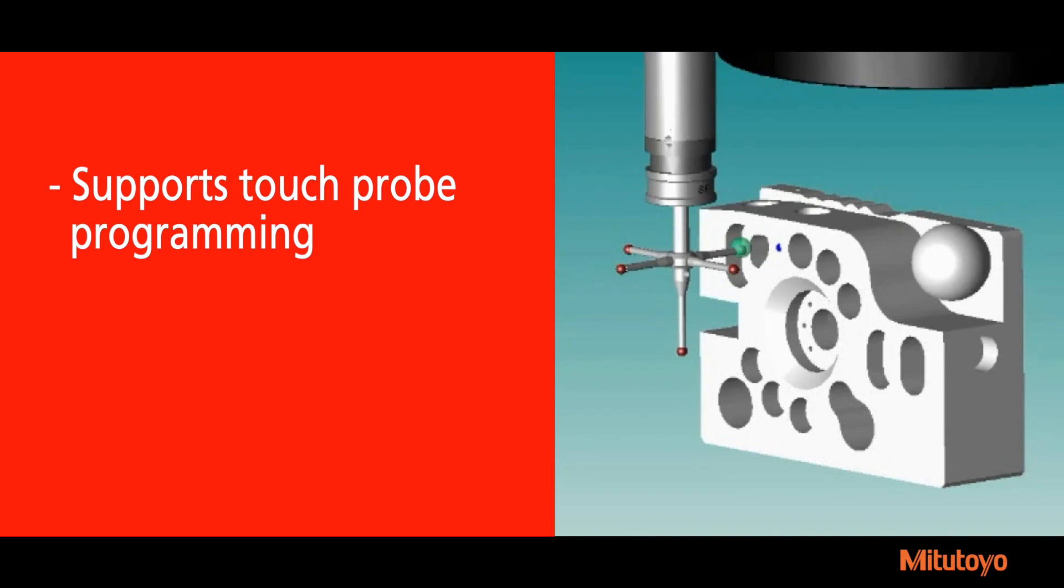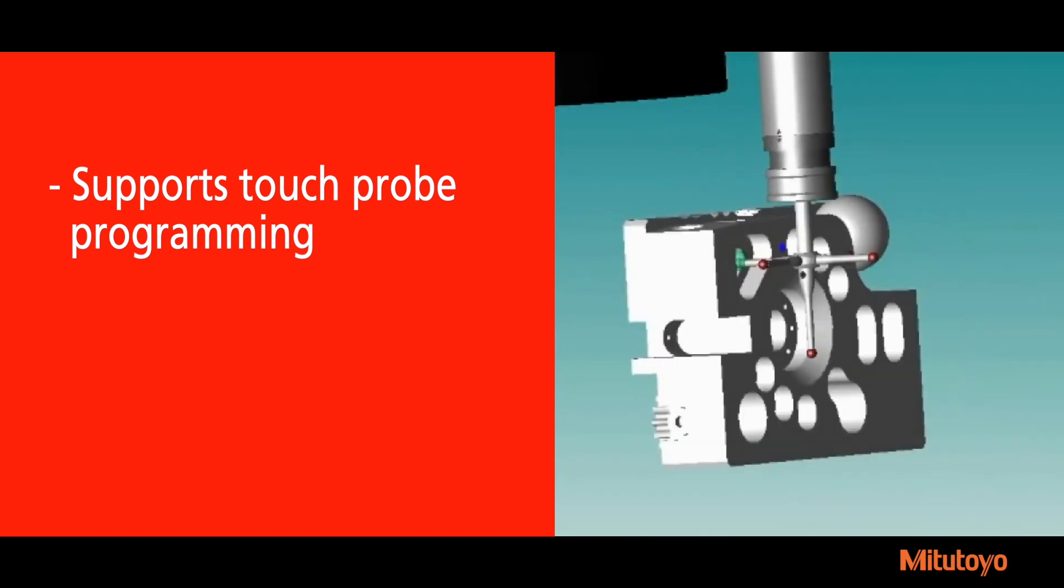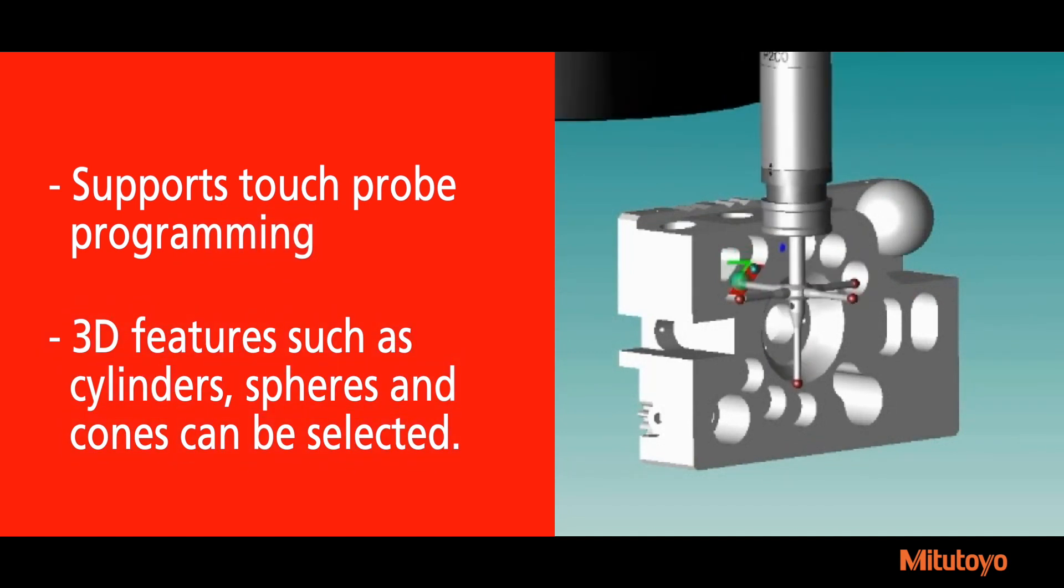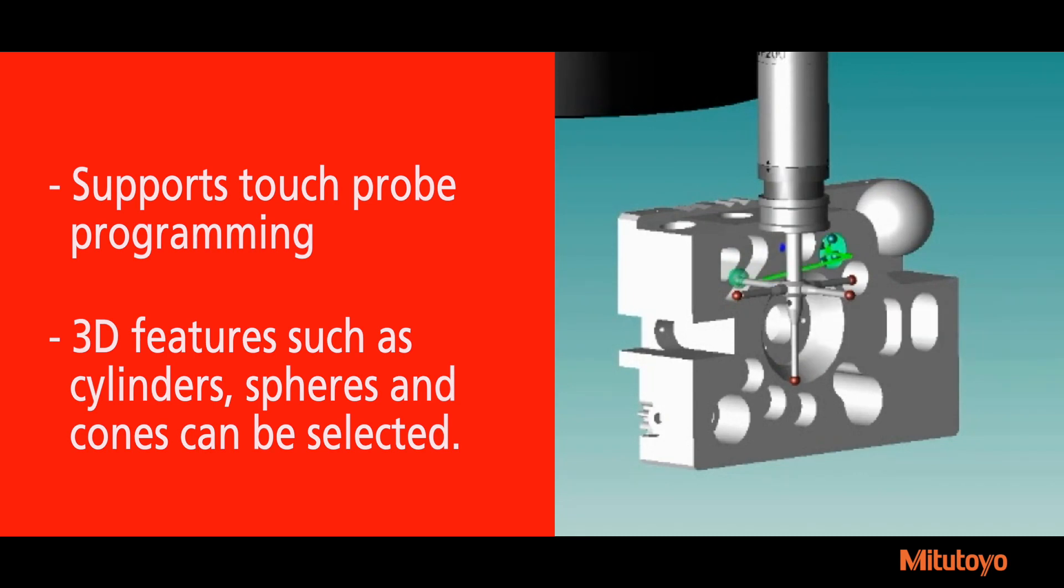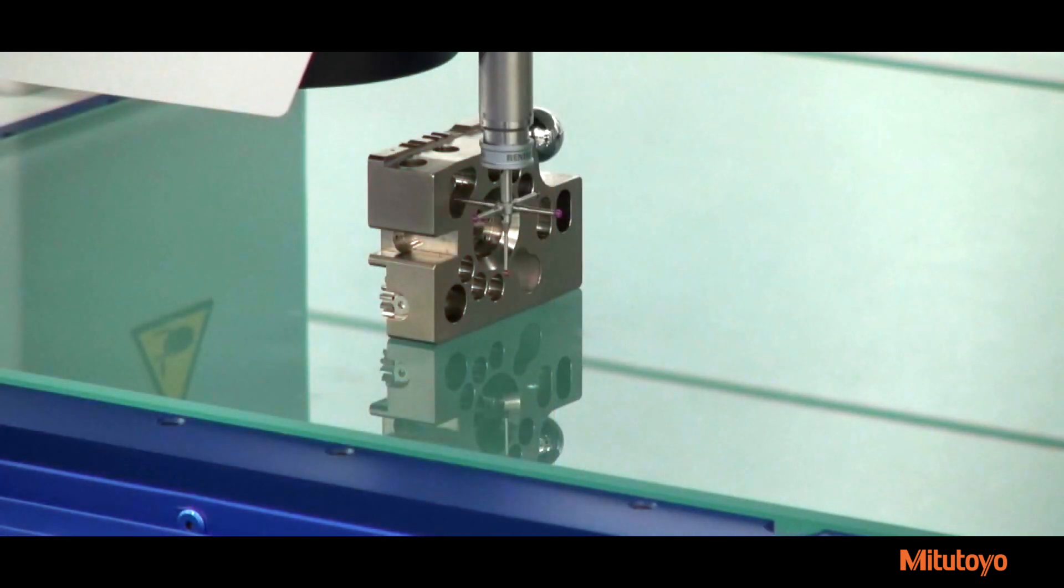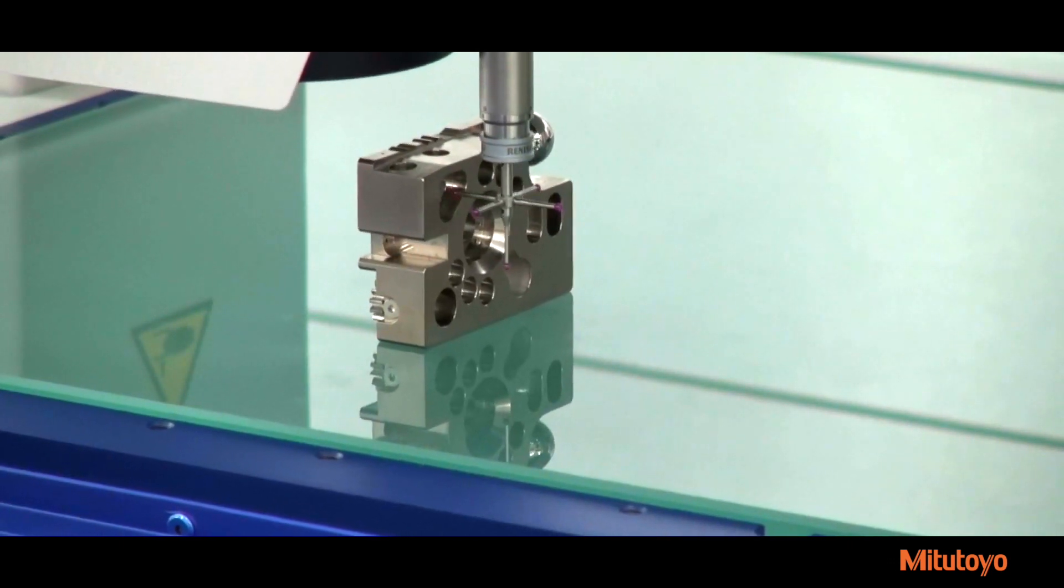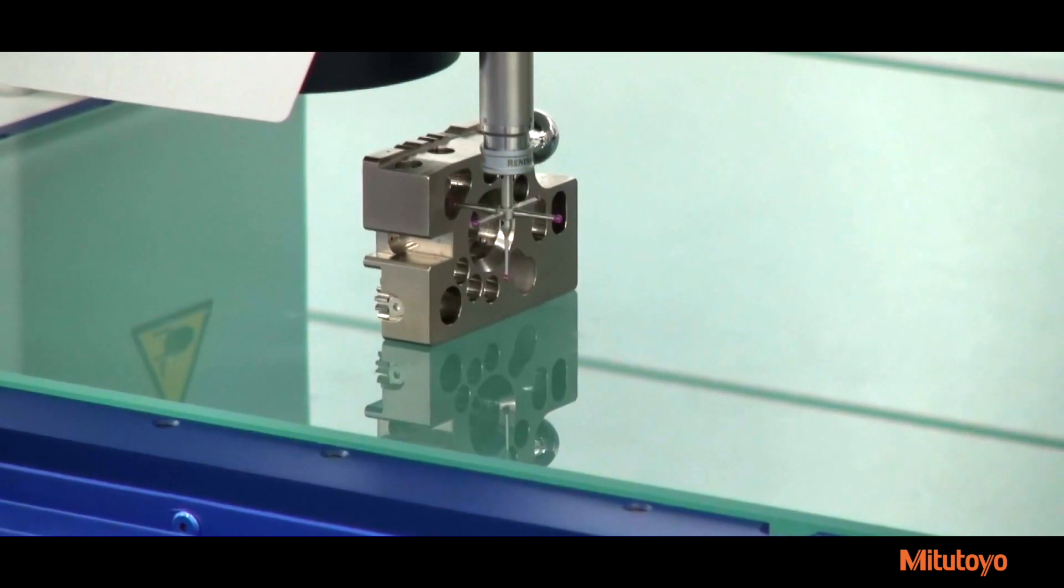QV3D CAD supports touch probe programming as well, allowing 3D features such as cylinders, spheres, and cones to be selected. Feature selection is done the same way with touch probe programming as with the camera. The number of location points can be specified, and then same as the camera, the measurement can be simulated in offline mode or directly measured in online mode.